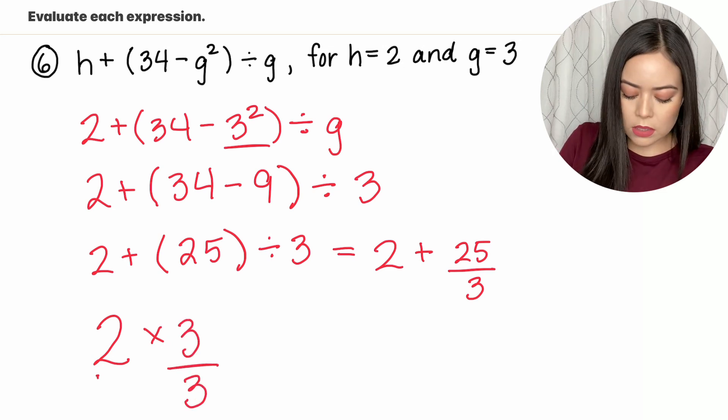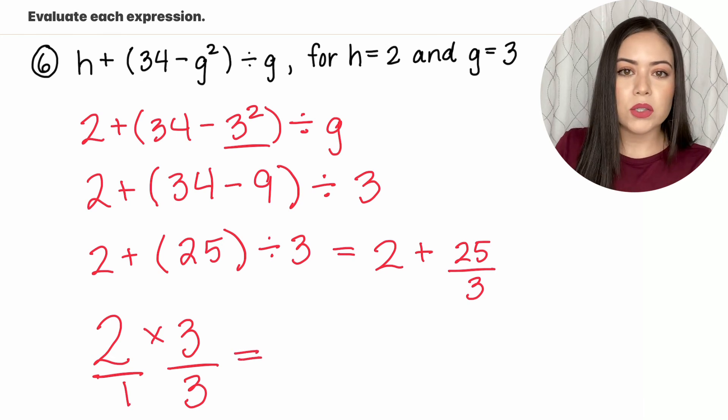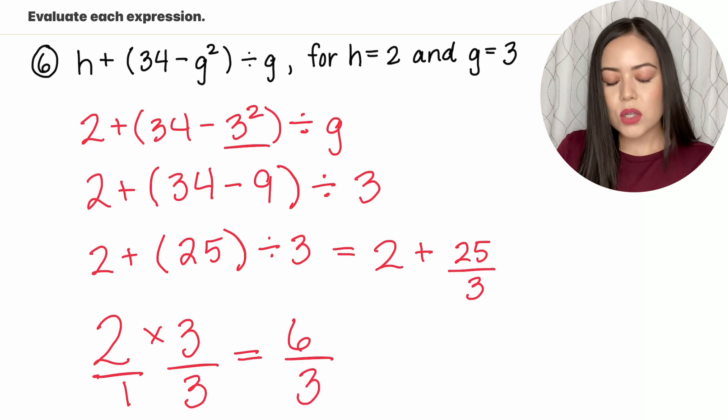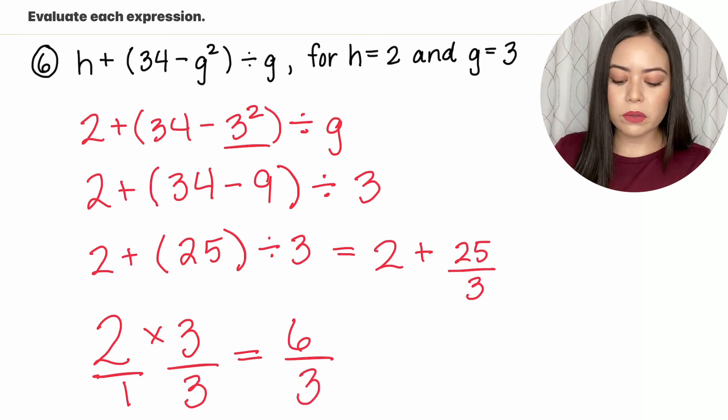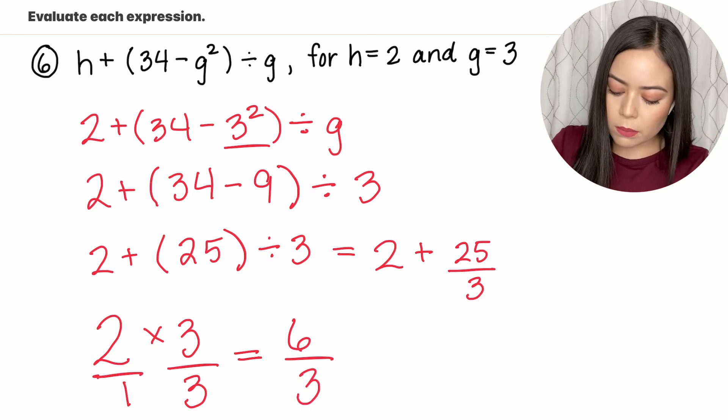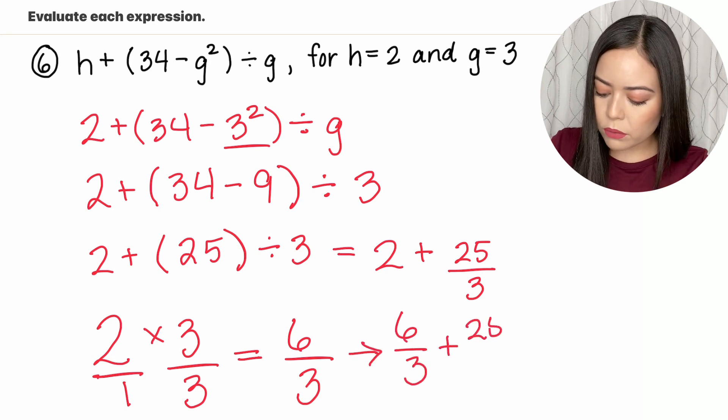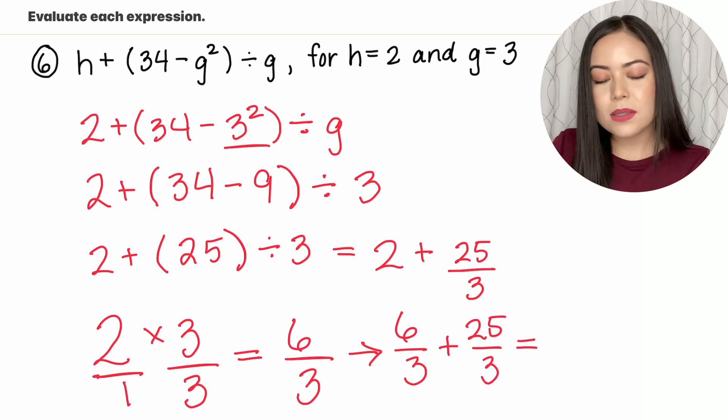All whole numbers have a denominator of 1 and we're just going to multiply across. 2 times 3 is 6 and 1 times 3 is 3. So 2 wholes is equivalent to 6 thirds. So I'm going to write that right underneath. I'm going to bring down 25 over 3 and now we can simplify.